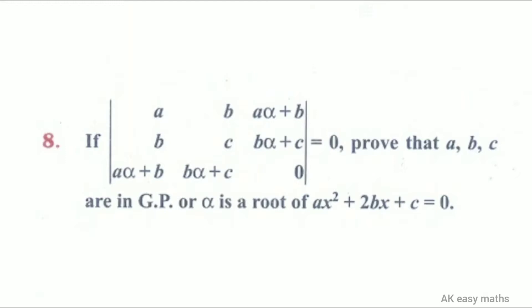If the determinant with elements a, b, a alpha plus b in first row; b, c, b alpha plus c in second row; a alpha plus b, b alpha plus c, 0 in third row equals 0, prove that a, b, c are in GP or alpha is a root of ax squared plus 2bx plus c equal to 0.